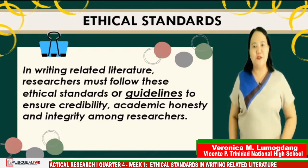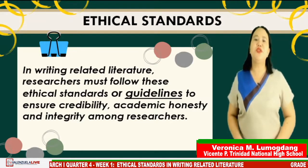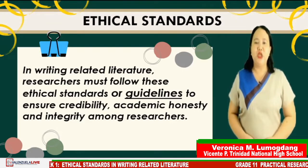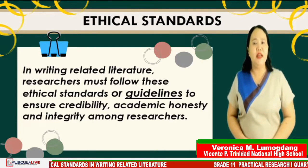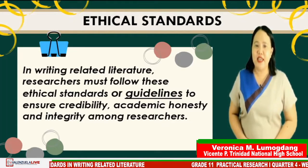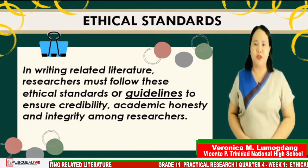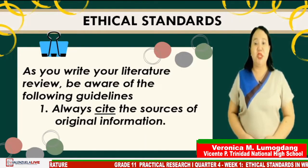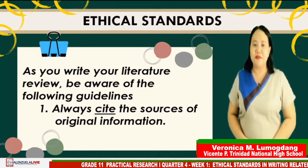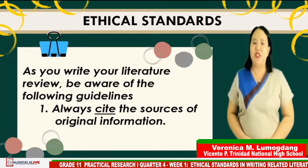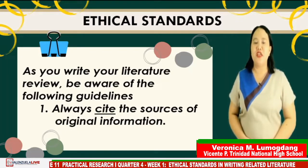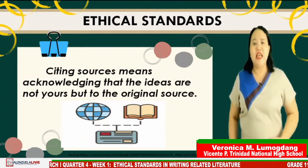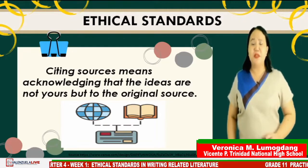In writing related literature, researchers must follow these ethical standards or guidelines to ensure credibility, academic honesty, and integrity among researchers. As you write your literature review, be aware of the following guidelines. Number one: always cite sources of original information. Citing sources means acknowledging that the ideas are not yours but belong to the original source.